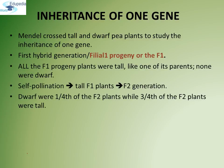For inheritance of one gene, Mendel crossed a tall plant with a dwarf pea plant. Seeds produced as a result of this cross were collected and grown to generate the first hybrid generation, called the filial progeny or F1 progeny. All F1 progeny plants were tall like one of their parents — none were dwarf. Similar observations were seen for other pairs of traits. Mendel then self-pollinated the tall F1 plants and produced the F2 generation. In F2, both parental traits were expressed: one-fourth of plants were dwarf and three-fourths were tall.